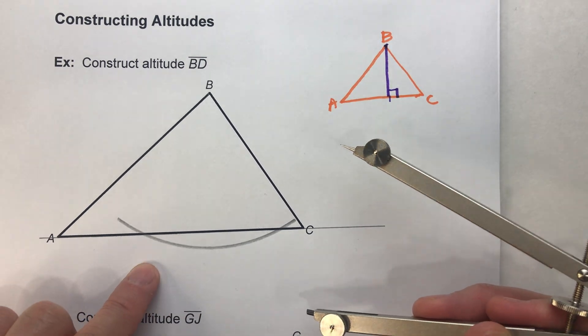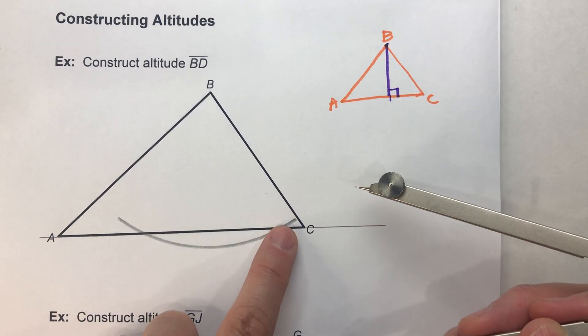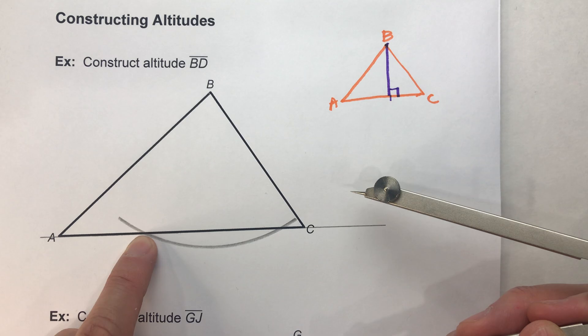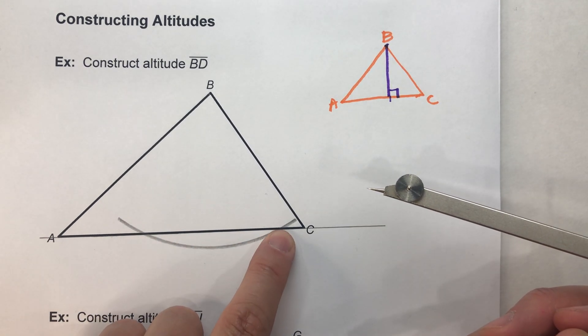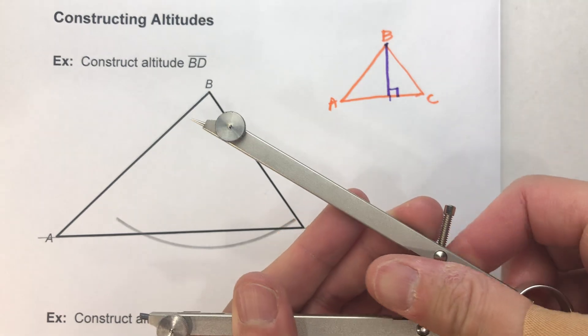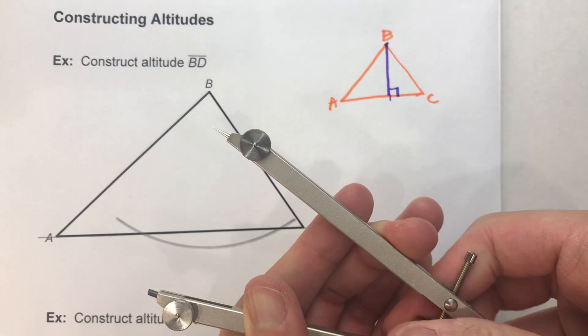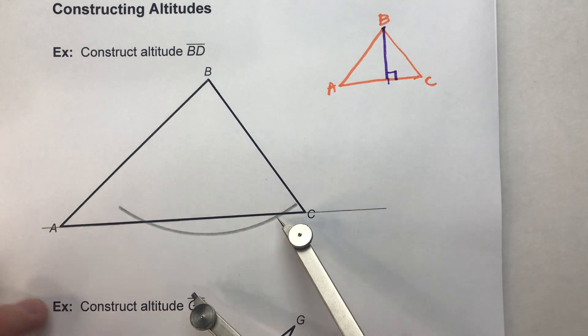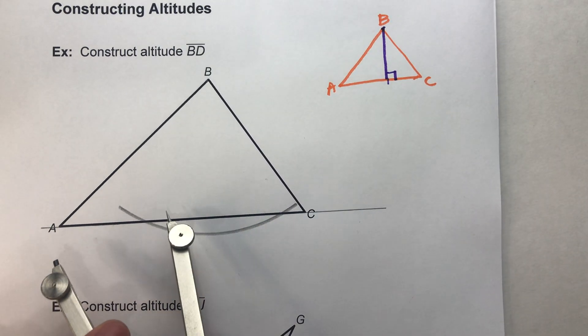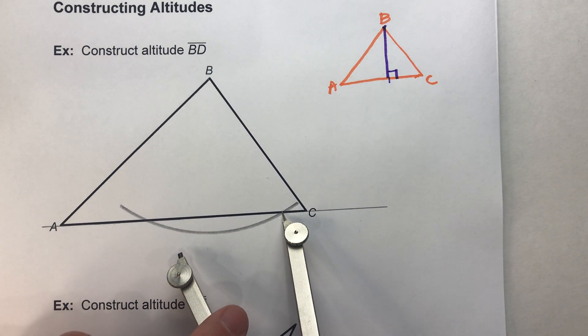Now from there, I'm going to go off each intersecting spot. So see where the arc intersects the segment here and it intersects there. I'm going to take my compass setting and it doesn't have to be the same as before. I'm going to make it a little smaller. But it does have to be more than half the distance from where the arc hits the line segment.